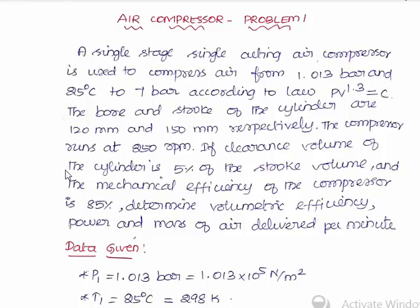According to the law PV to the power 1.3 is equal to constant. The initial pressure, initial temperature, and final pressure of the air after getting compressed are given. The polytropic process is carried out with index 1.3. The bore and stroke of the cylinder are 120 mm and 150 mm respectively, and the compressor runs at 250 rpm.